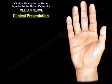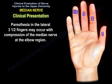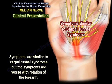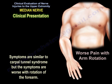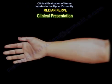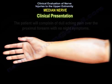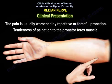Clinical presentation: paresthesia in the lateral three-and-a-half fingers may occur with compression of the median nerve at the elbow region. Symptoms are similar to carpal tunnel syndrome, but are worse with rotation of the forearm. Patients will complain of dull, aching pain over the proximal forearm with no night symptoms. Pain is usually worsened by repetitive or forceful pronation, and tenderness on palpation of the pronator teres muscle can be found.